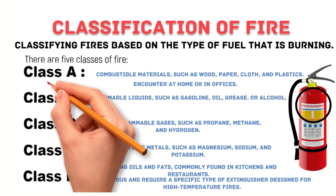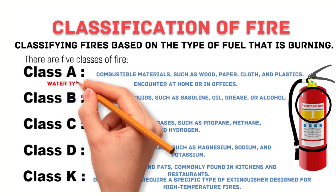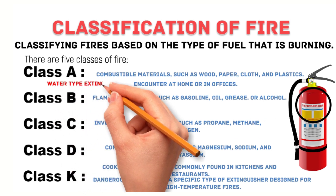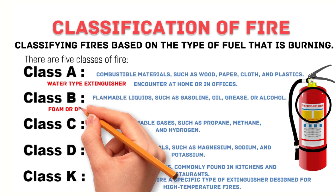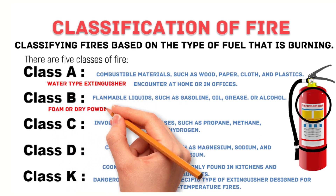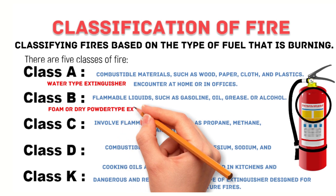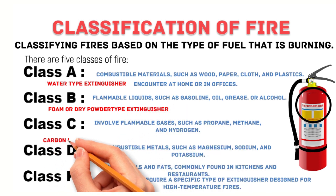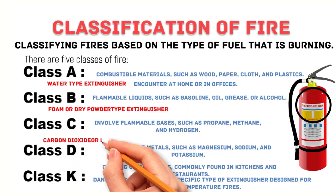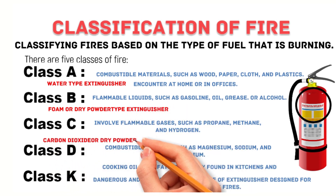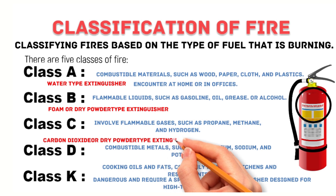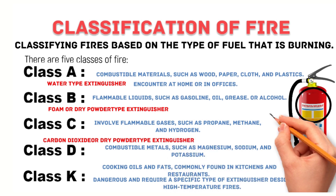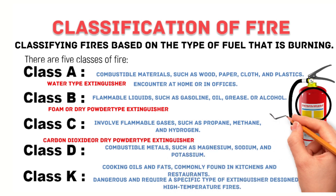Each class of fire requires a different type of fire extinguisher to extinguish it. For example, Class A fires can be extinguished with water, Class B fires can be extinguished with foam or dry powder, and Class C fires can be extinguished with carbon dioxide or dry powder.